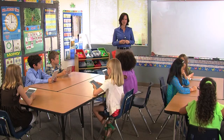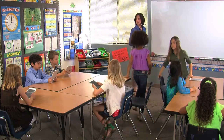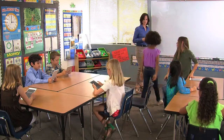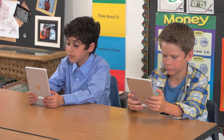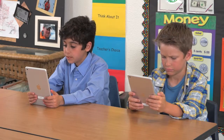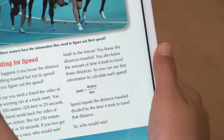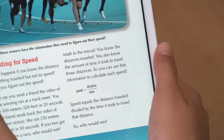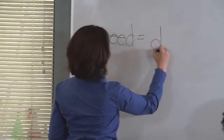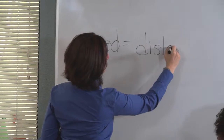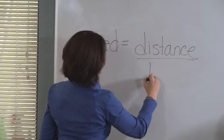Maya and Bella, come up to the board. Kean, please read the rest of the page. Math to the rescue. You know the distances traveled. You also know the amount of time it took to travel those distances. So you can use that information to calculate each speed. Speed equals distance traveled divided by the time it took to travel that distance. So who would win?